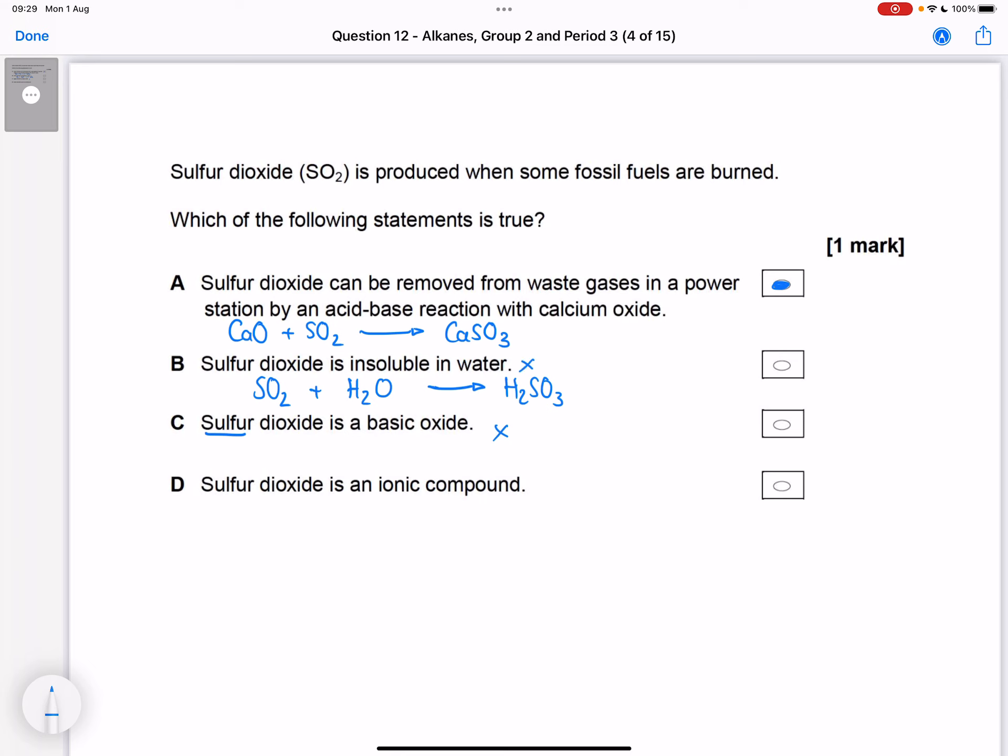Sulfur dioxide is an ionic compound - well it doesn't contain a metal and it isn't an acid in the sense that it's H₂-something or H-something. So sulfur dioxide is not ionic, it's made out of two non-metals. It's a simple molecule and therefore we've confirmed what we thought, which is that A is correct.